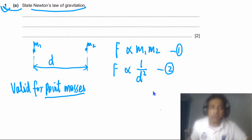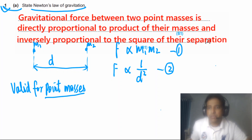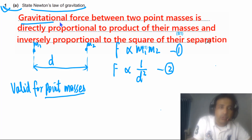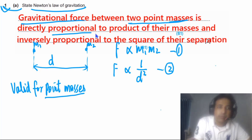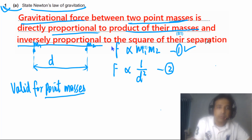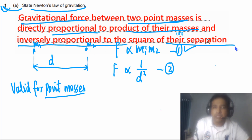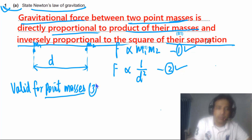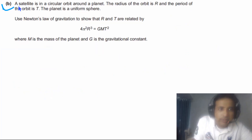So in your answer you must mention two key points: first, the gravitational force between two point masses is directly proportional to the product of the masses; second, it is inversely proportional to the square of the separation. And third, you must mention 'point masses' — this has to be in your answer.